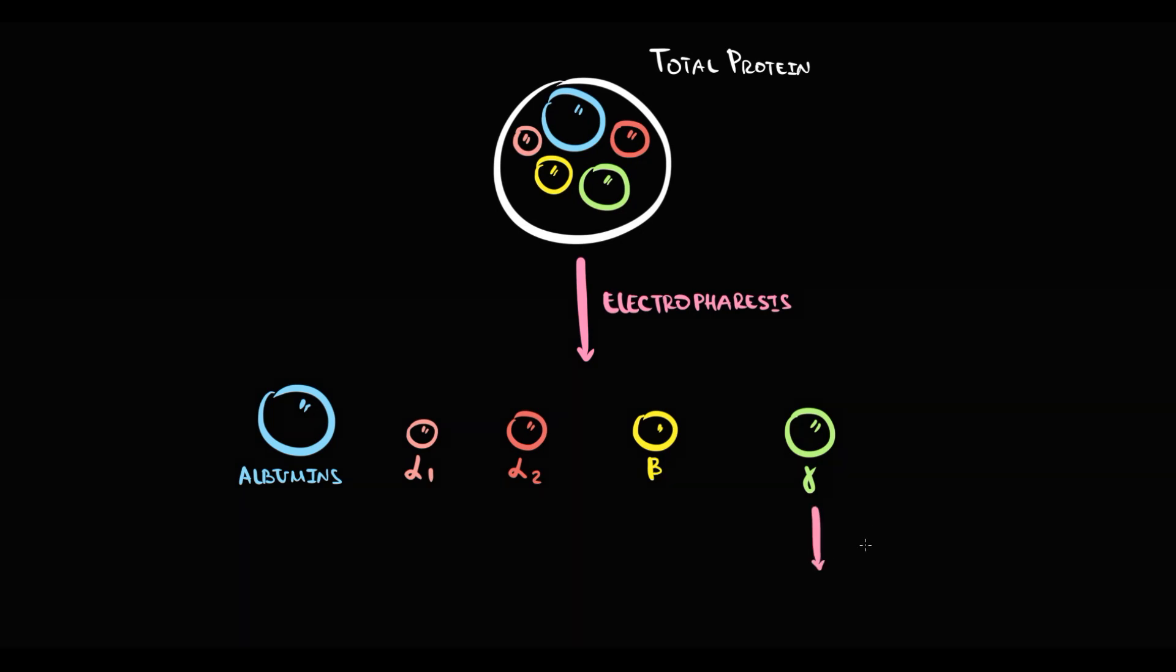But as we know, we have several classes of immunoglobulins. And to separate gamma globulin fraction on immunoglobulin classes, we use immunofixation.